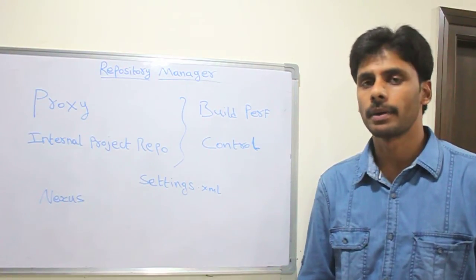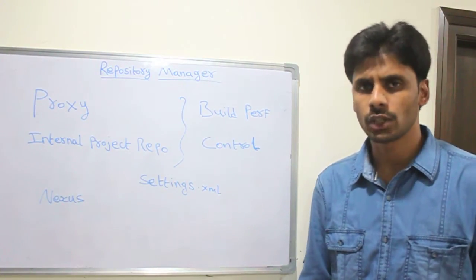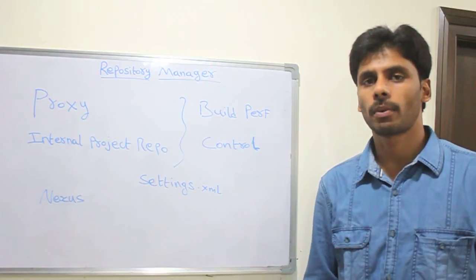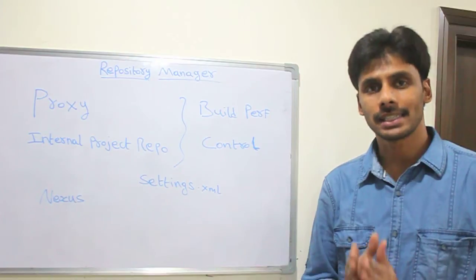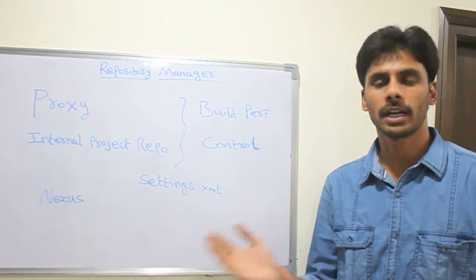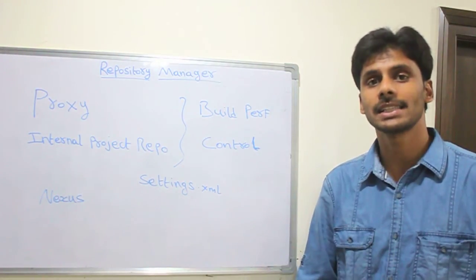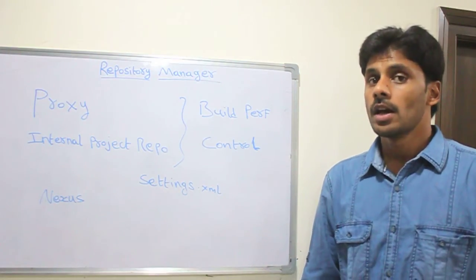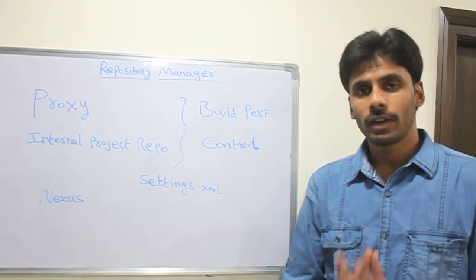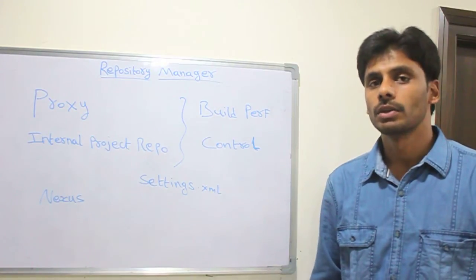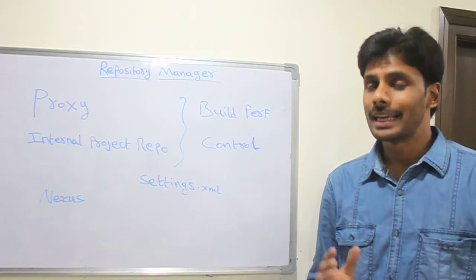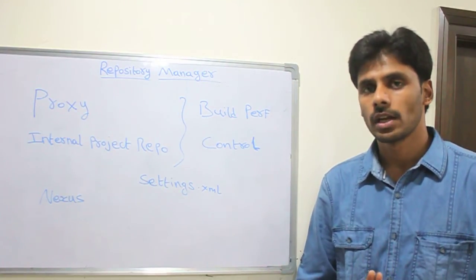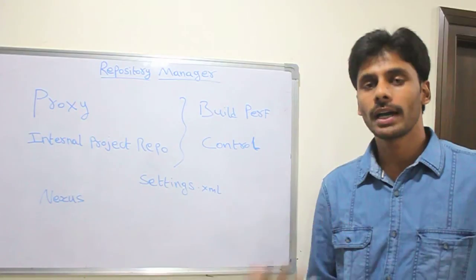For example, if you are using Apache Axis 2, Spring Framework, Hibernate—all these jars—when you build your project and if your project has declared these projects as dependencies in the Maven pom.xml, Maven will pull them from the public repository, which is going to take a lot of network bandwidth and time, which will of course decrease your build performance and build time increases.